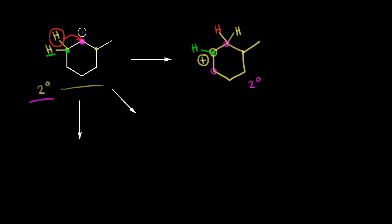We could also draw it like this — without drawing in all of the hydrogens. When you do a lot of practice, you don't have to draw in all the hydrogens; you could just think about a hydride shift, with the methyl group forming a carbocation at that carbon. But when you're first doing this, you should draw in all the hydrogens just for practice.